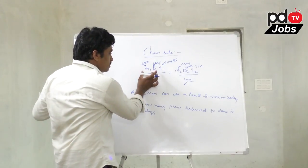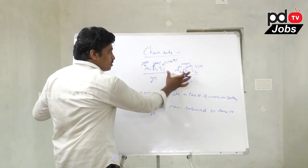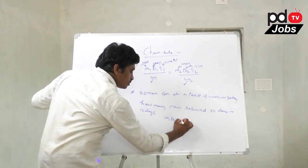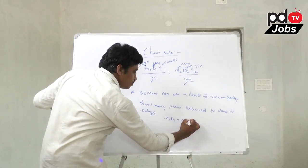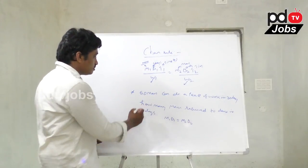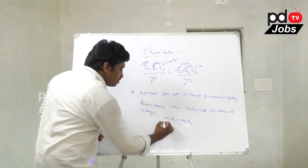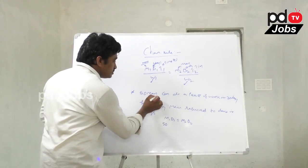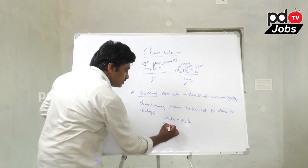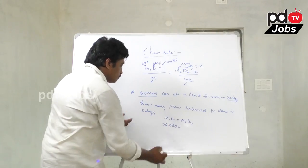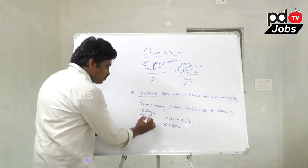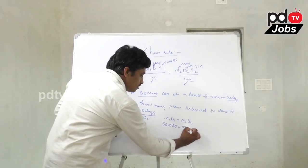Here we will use the formula M1 × D1 = M2 × D2. M1 is 50, D1 is 30, and D2 is 15. So: 50 × 30 = M2 × 15. Since 30 divided by 15 is 2, we get M2 = 50 × 2.